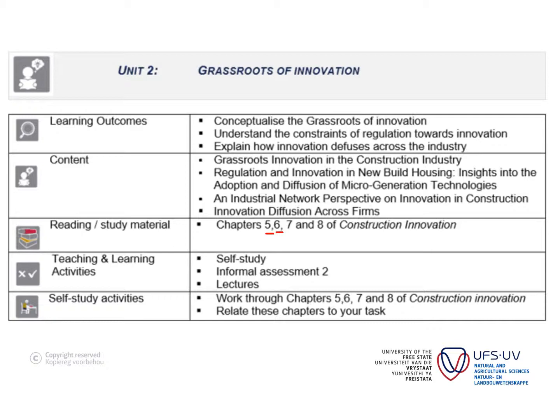Looking at the learning outcomes: conceptualizing the grassroots of innovation, we're still looking at the main areas of innovation in construction, what drives innovation, and what's the goal of innovation. Secondly, we're trying to understand the constraints of regulations towards innovation — how much regulations actually influence our innovation process. Then we explain how innovation diffuses across the industry in chapter 8. Chapters 5, 6, 7, and 8 can actually be seen as one holistic chapter.